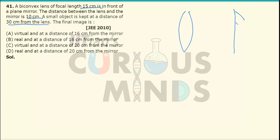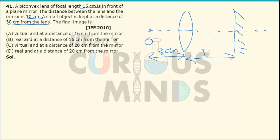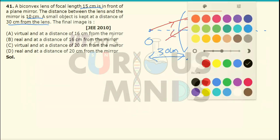Consider this as the convex lens and this as the plane mirror, with this as the principal axis. An object is placed at a distance of 30 cm from the convex lens, and the distance between the lens and the mirror is 10 cm. The light will first pass from the object through the lens, then get reflected from the mirror, and then pass through the lens again.